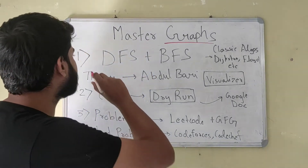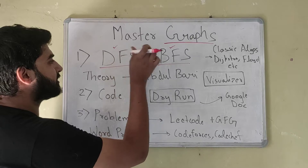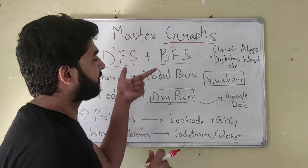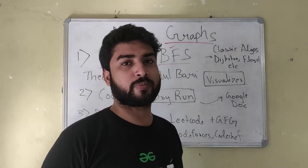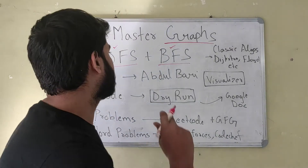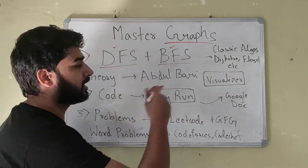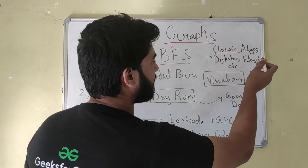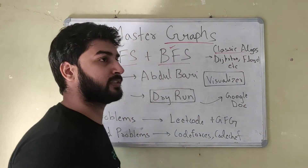Step number one is learning the necessary algorithms. The most important ones are DFS and BFS — depth first search and breadth first search. If you don't know DFS or BFS, you'll have a very hard time cracking interviews at top companies. Apart from those, you also have classic algorithms like Dijkstra, Floyd-Warshall, and Bellman-Ford. You need to learn all of these theory-wise.